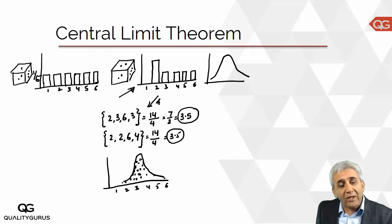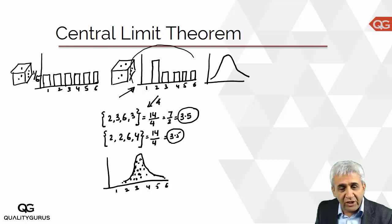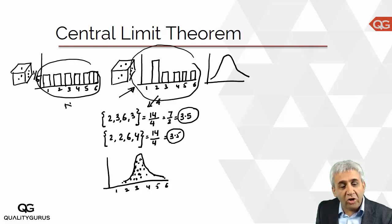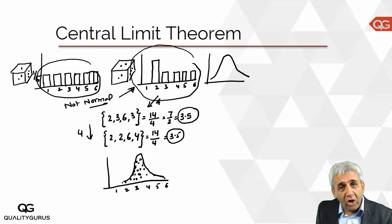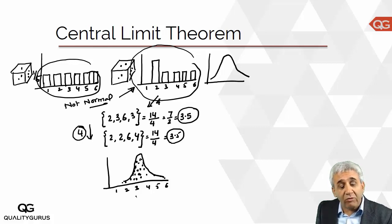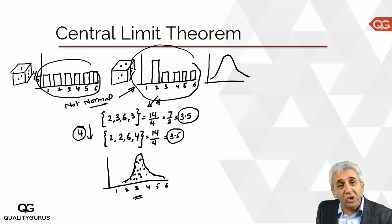The Central Limit Theorem says that whatever your original distribution is — and here those distributions were not normal — once you start drawing a number of samples (in our case 4 samples) and take the average, as that sample size increases from 4 to 6 to 8 items, the distribution of the sample means will tend to become a normal distribution, irrespective of whatever distribution you had originally.